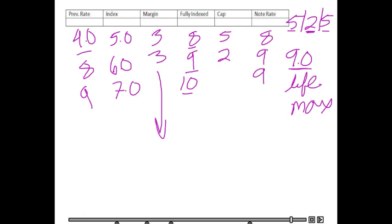One more example: let's say the index plummets the next year to 4%, making the fully indexed rate 7%. Based on the caps, the rate could go down to 7. It can't go up because we're already at the lifetime max. And since 7 is within the range, we will adjust to 7%.